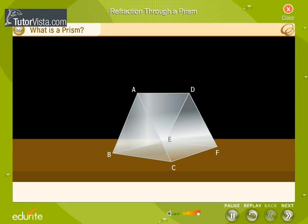The line along which the refracting surfaces meet is called the refracting edge of the prism. The angle between two refracting surfaces is called the angle of the prism. Any section of the prism perpendicular to the refracting edge is called the principal section of the prism.